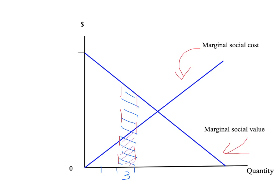We've done that for the third unit, but of course we could do the same thing for the second unit and for the first unit. For the second unit, the net gain to society from producing and consuming it is the area under the marginal social value curve less the area under the marginal social cost curve. And for the first unit, the social gain is similarly given by the area between the marginal social value curve and the marginal social cost curve.